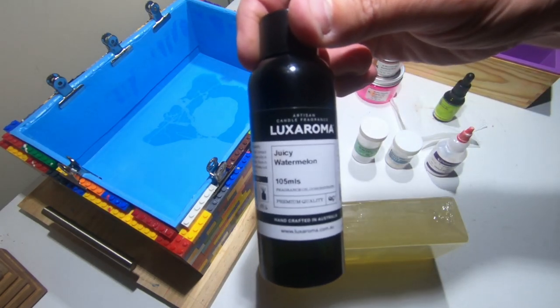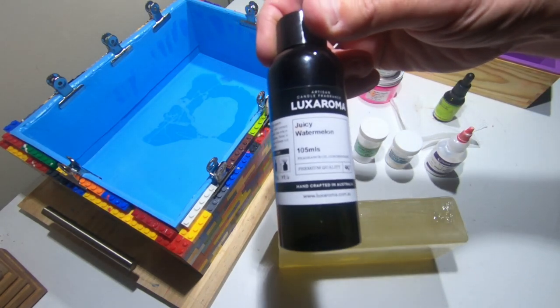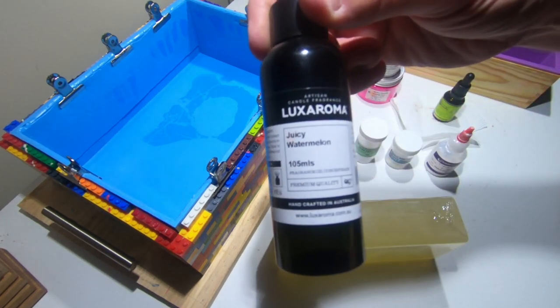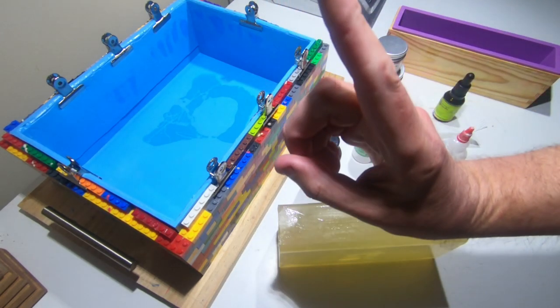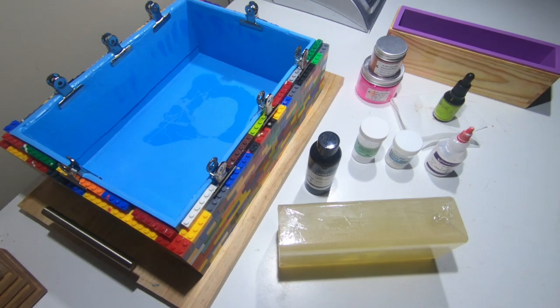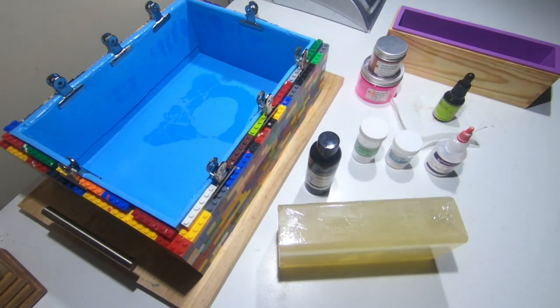The fragrance I'm going to be using is juicy watermelon at two percent and as you'll have noticed you can now actually see the label because I have new lights above and they are working perfectly. Let me know in the comments what you think of the new lighting system.